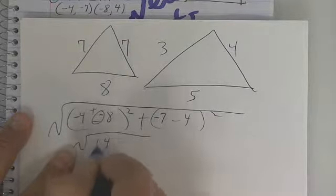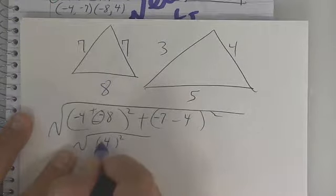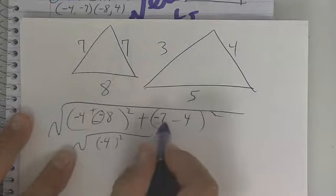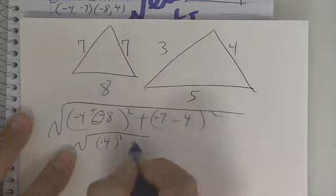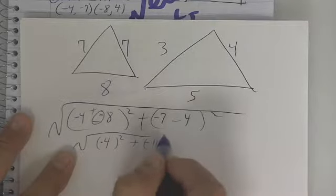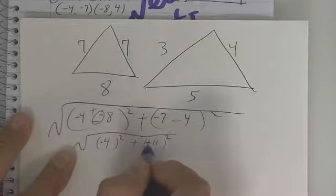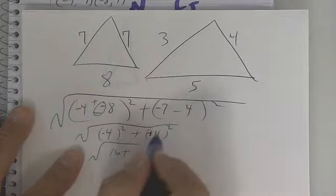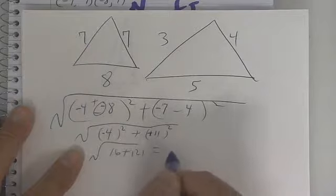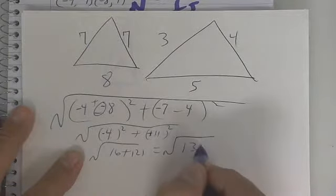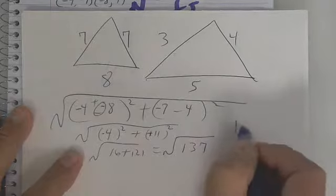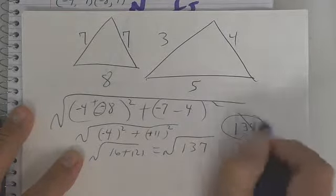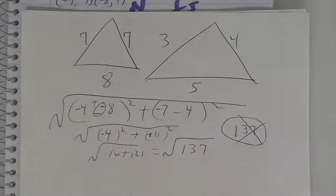If you did it the other way, instead of a positive 4, you got a negative. It's not going to matter. Instead of a negative 11, you got a positive. Again, it's not going to matter because when you square it, it becomes 16 plus whatever that is. And so your final answer looks like 137. But if you put 137, it's going to be wrong because that's not correct. It's the square root.